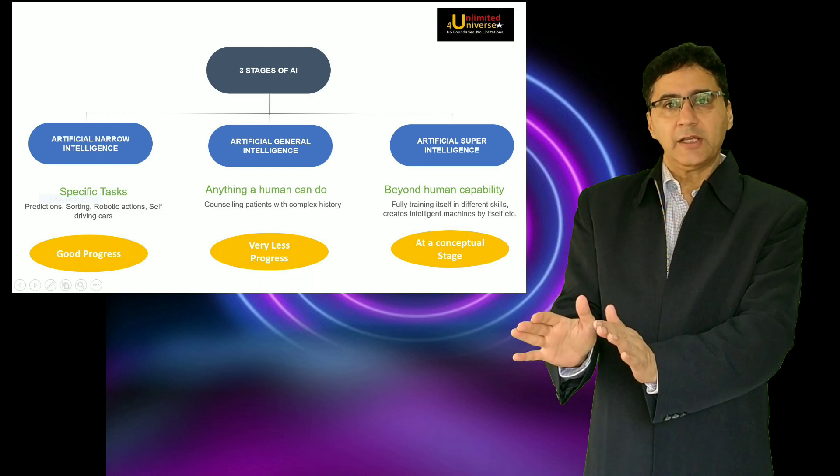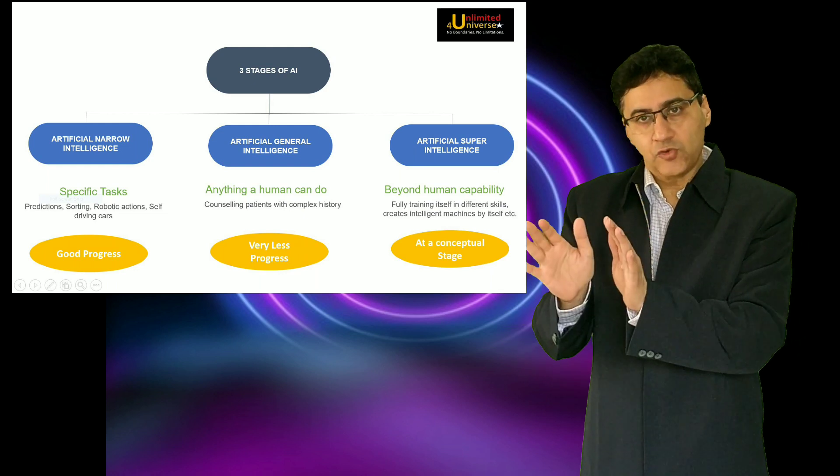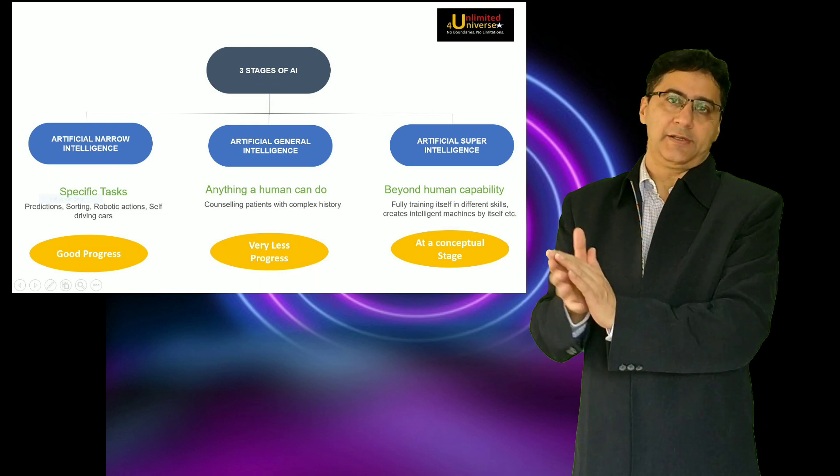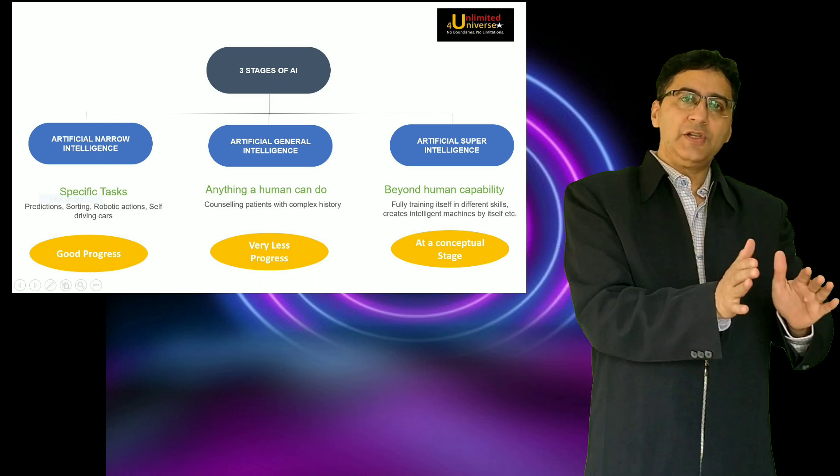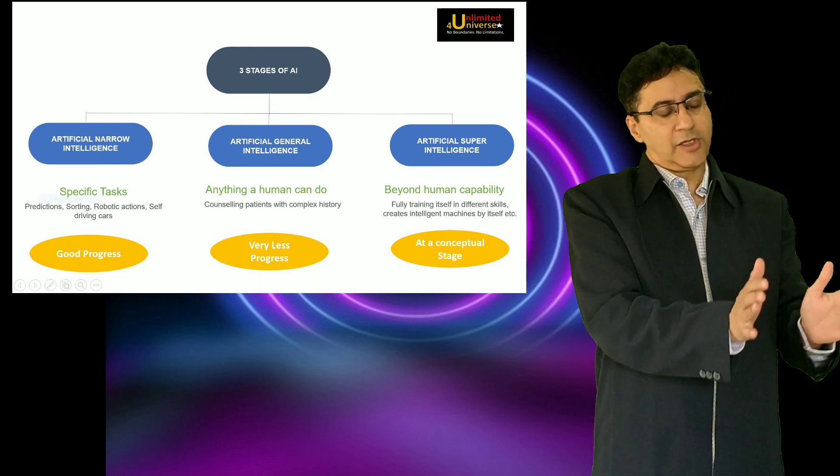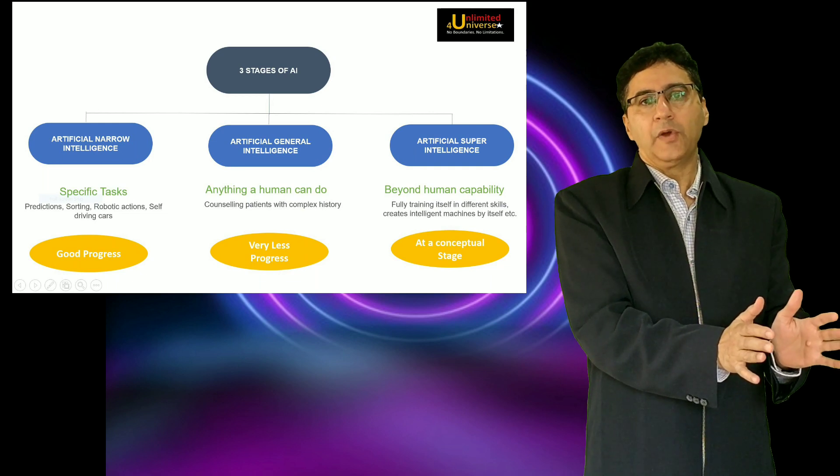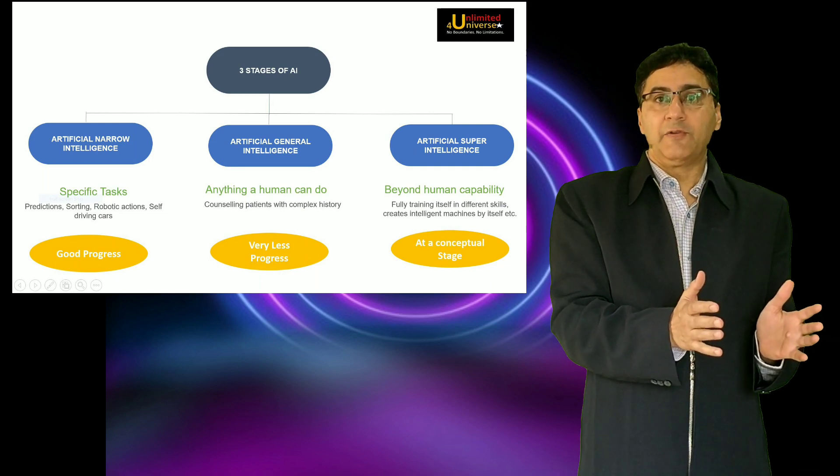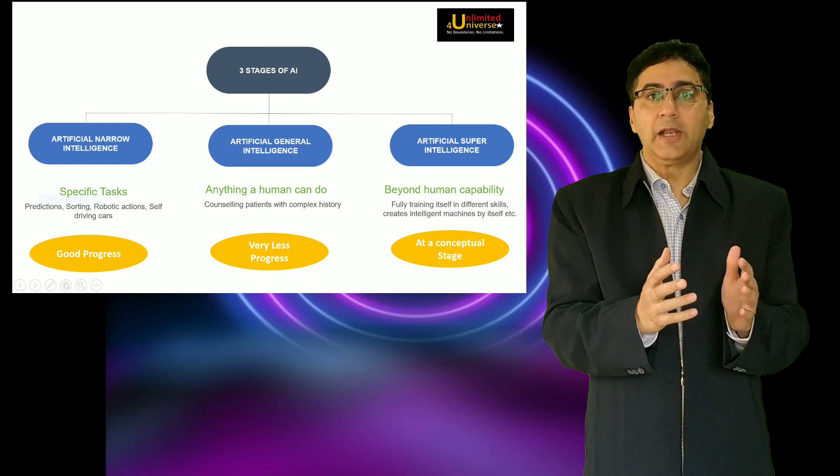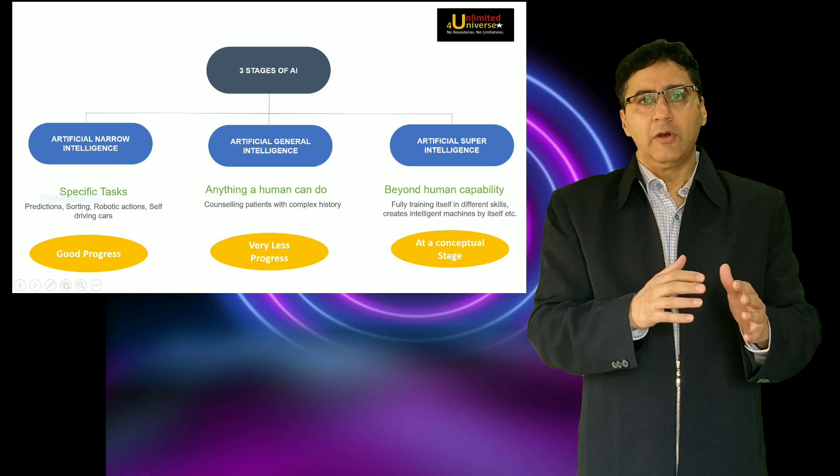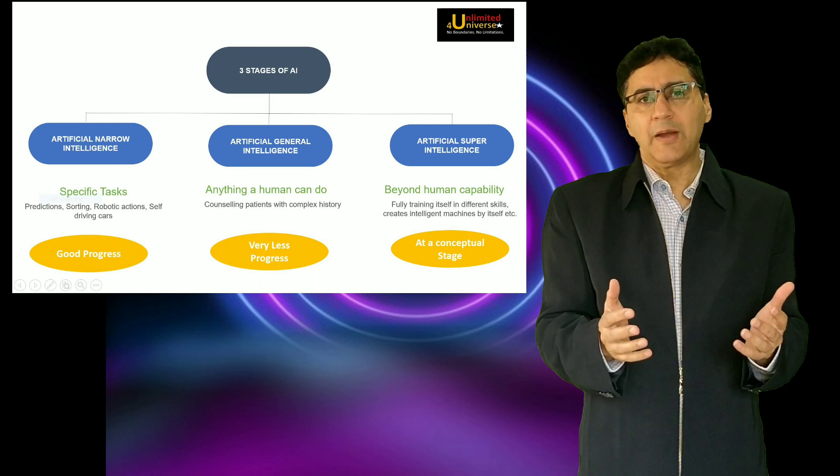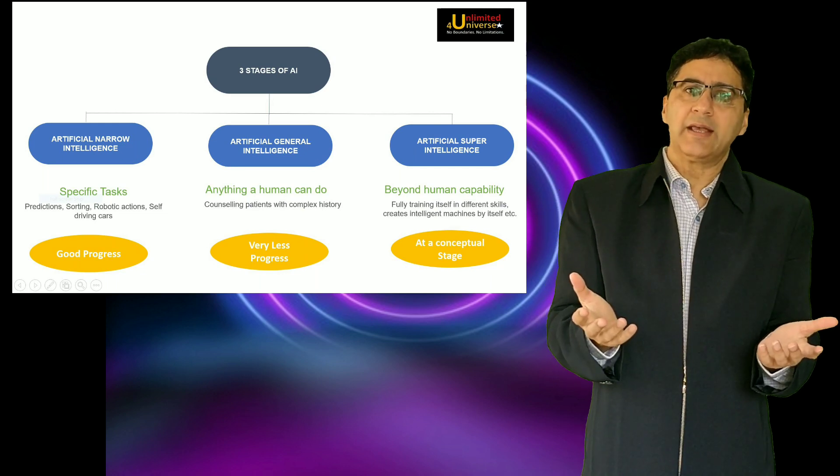Those specific tasks may be done quite intelligently but those will be limited specific tasks. Whereas Artificial General Intelligence, the system is expected to behave like a normal human being which means it will have cognitive abilities, it will have reasoning abilities, it will have most or many of the abilities which a normal human being has in total.